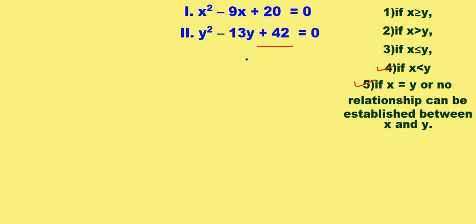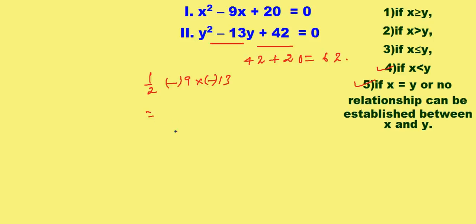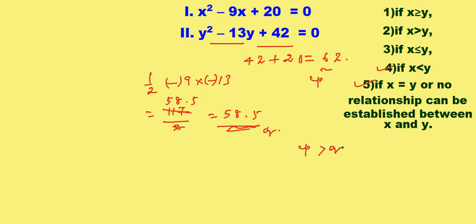Let's add the two constant terms: 42 plus 20 is equal to 62. Let's multiply the two middle-term values and divide by 2: that is 117 by 2, which is 58.5. This is p and this is q. As p, which is 62, is greater than q, which is 58.5, option 5 is ignored. The answer is x is less than y.